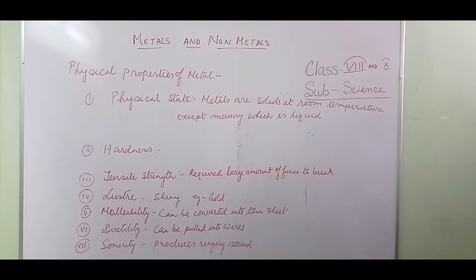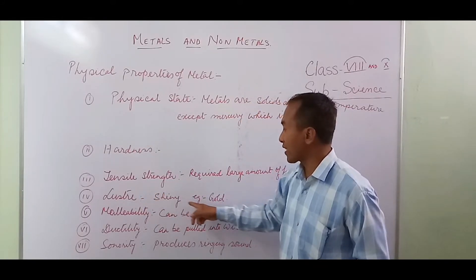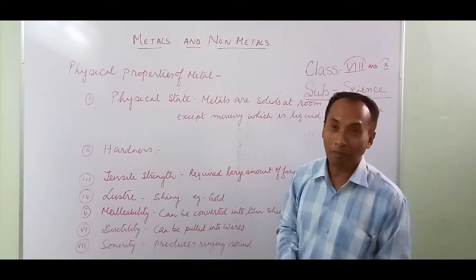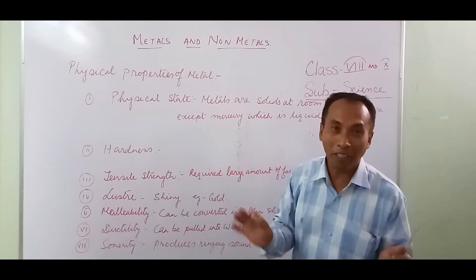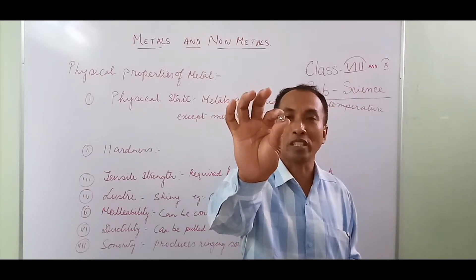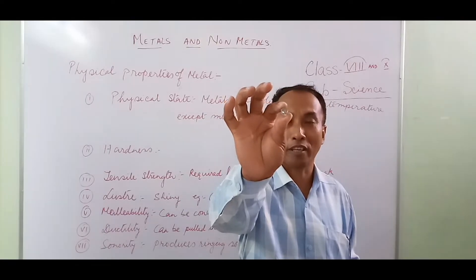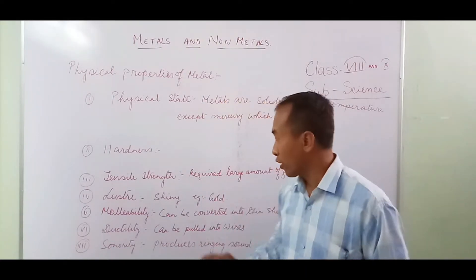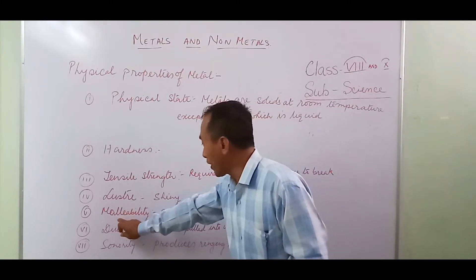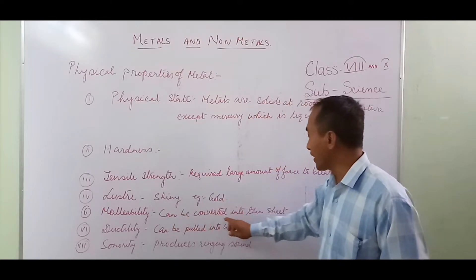The next property is luster — all metals are lustrous, meaning shiny. I cannot show you gold because I don't have any here, but I have zinc, which is very shiny in color. Shiny means lustrous — luster meaning is shine. So all metals are lustrous.